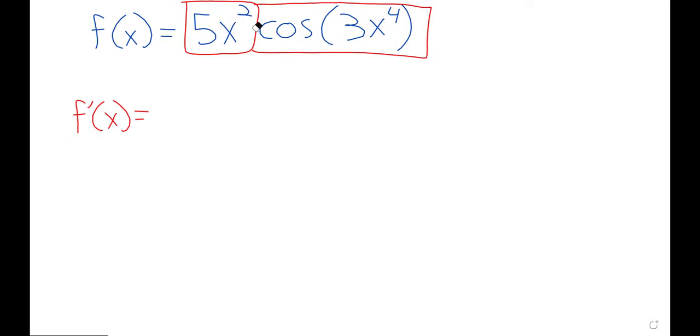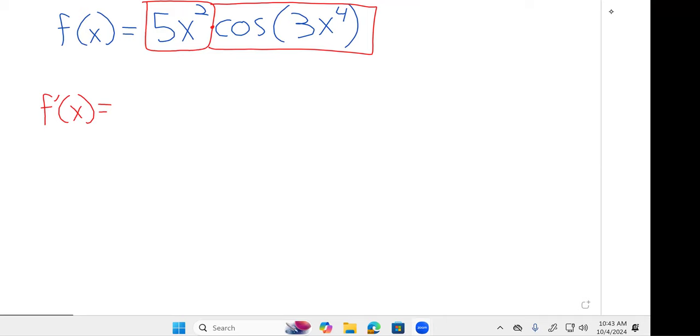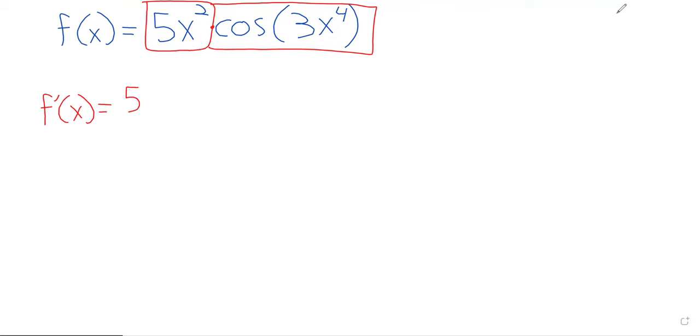Maybe I'll just show all of the steps. So when we take the derivative of the first function, the 5 is a constant and it just sits there. And then the power rule says that the 2 comes down and then we reduce it in the power. So that's where that 10x I had came from.